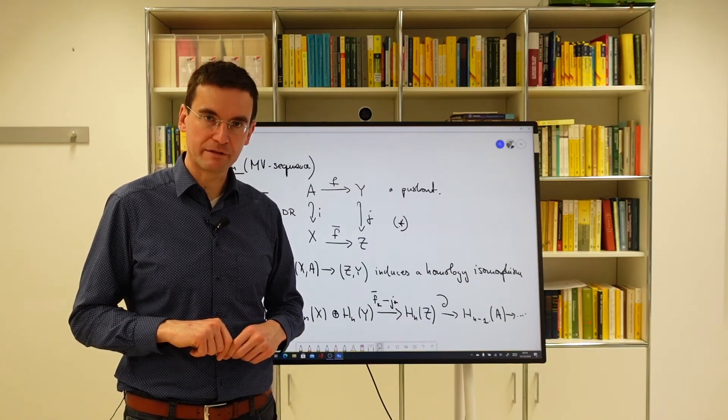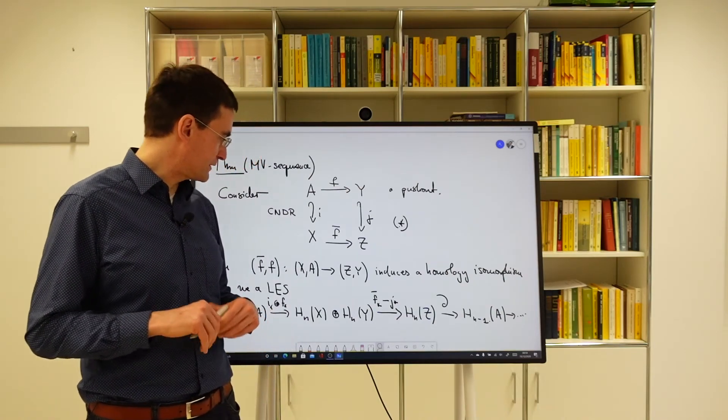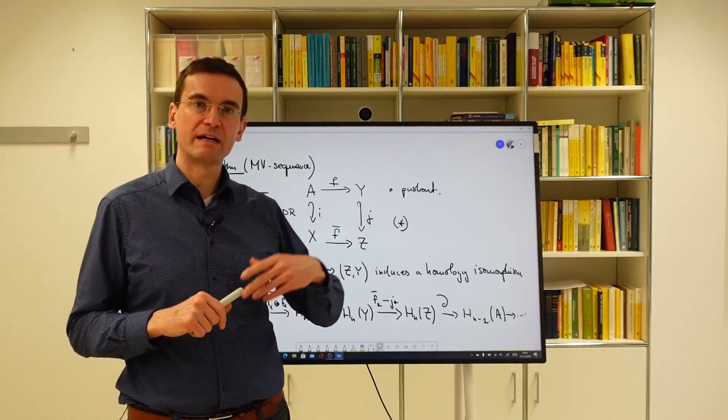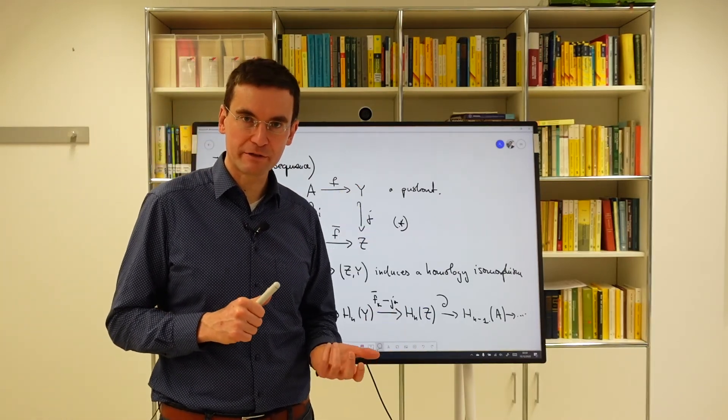And constructing the boundary maps from these two sequences and this isomorphism. So just have a look at the proof of the Mayer-Vietoris sequence.